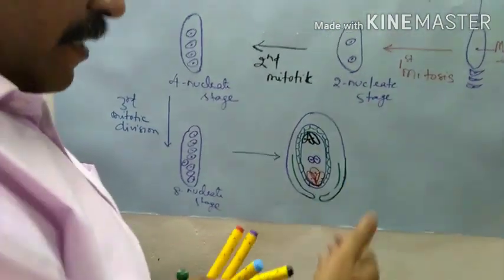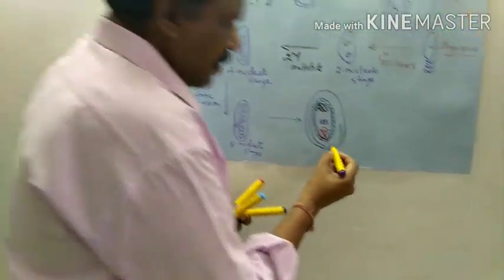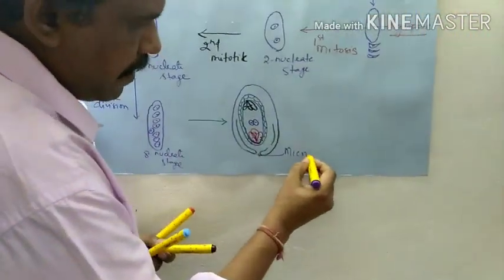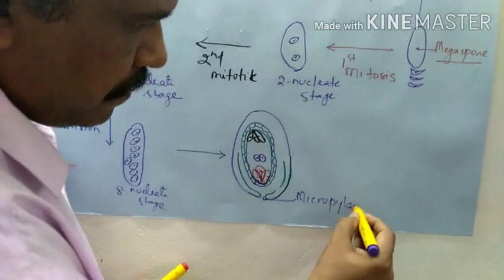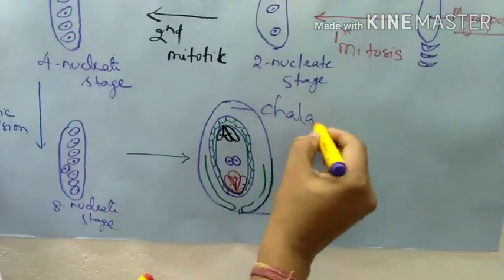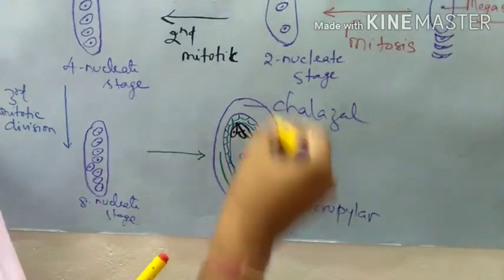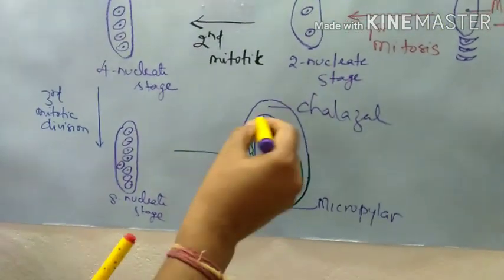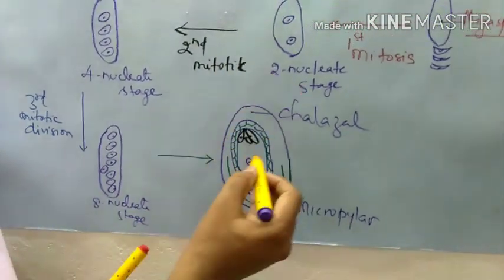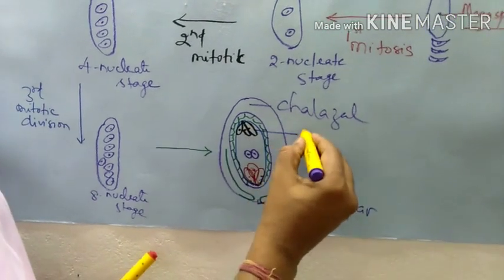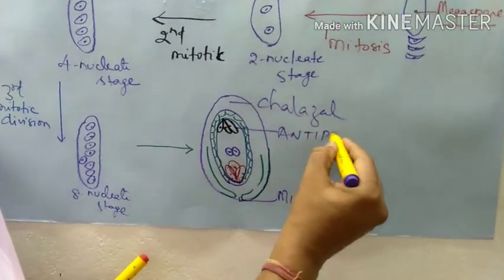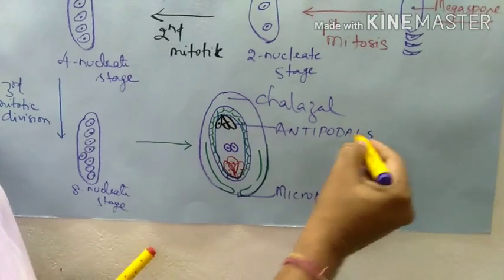Three cells towards the micropylar end. You have to remember this is the micropylar end and this is the chalazal end. So towards the chalazal end you develop three cells — and what is the name of those three cells? They are called as antipodals.